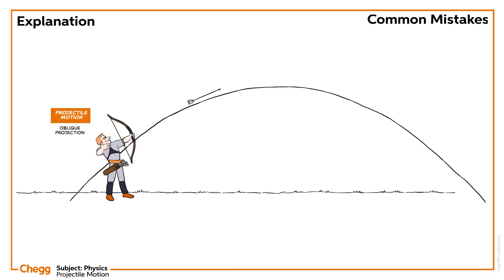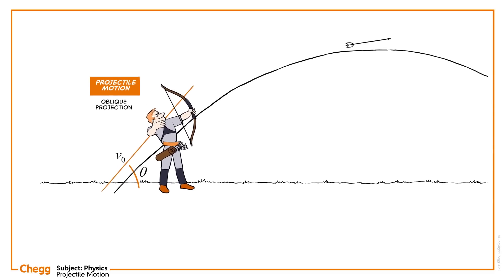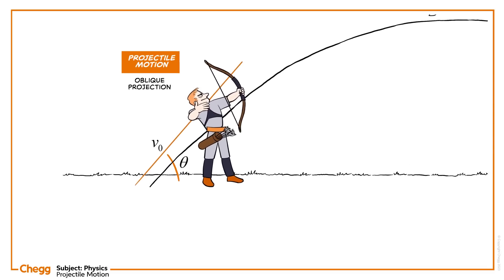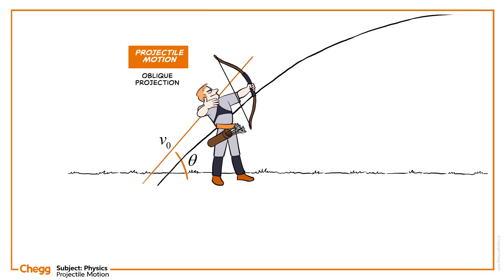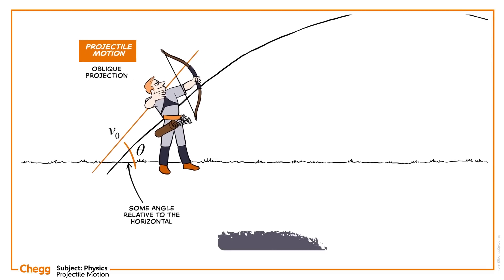The object is projected at an initial speed of V0 at an angle theta above the horizontal, as shown in the figure. As the object is projected with some angle relative to the horizontal, the launch velocity can be resolved into two perpendicular components.